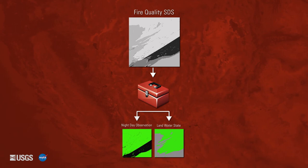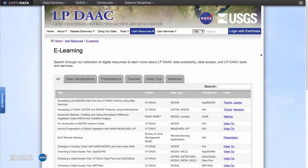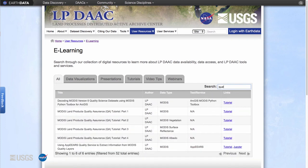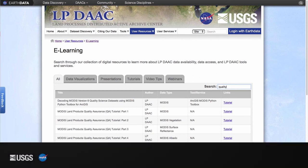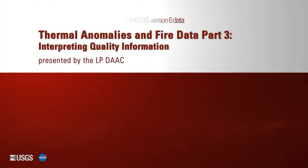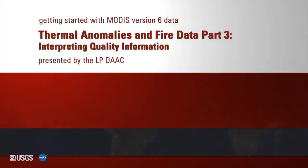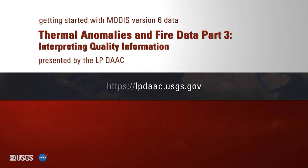Detailed materials about quality information are available on the eLearning page on the LP DAAC website. Search for 'quality' in the table to learn more about the QA information and the AppEEARS and Python tools mentioned in this video. Thank you for watching. For more information on MODIS Version 6 thermal anomalies and fire data, please visit the LP DAAC website at lpdaac.usgs.gov.